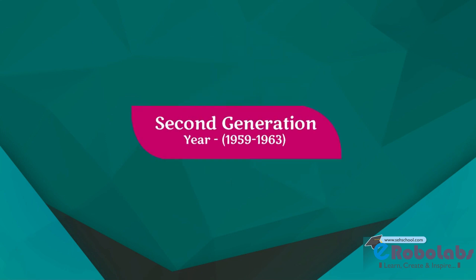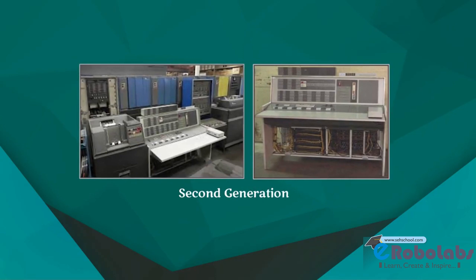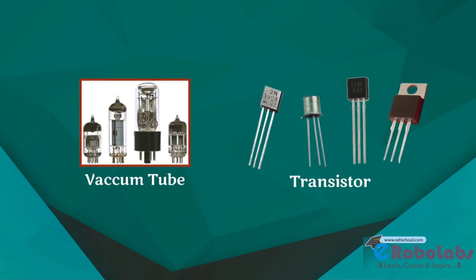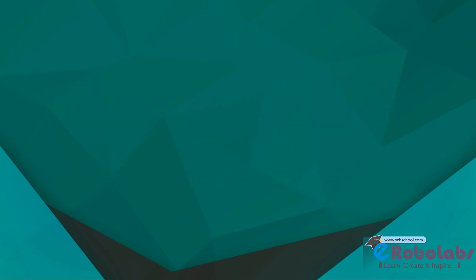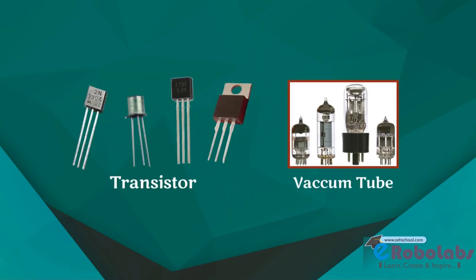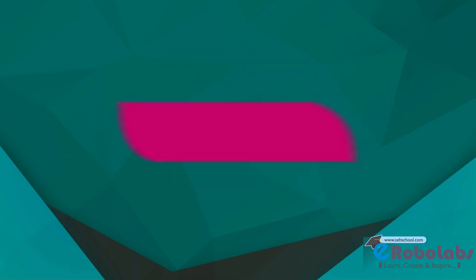Second generation, year 1959 to 1963. As development moved further, second generation computers arrived. In this generation, transistors were used as the electronic component instead of vacuum tubes. A transistor is much smaller in size than a vacuum tube. As the size of electronic components decreased from vacuum tubes to transistors, the size of computers also decreased and became much smaller than earlier computers.